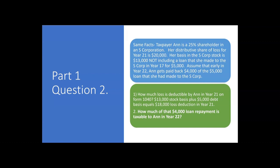Question two. Same facts. Taxpayer Ann's a 25% shareholder in an S-Corp. Her distributive share of loss for year 21 is $20,000. Her basis in the S-Corp stock is $13,000, that's her stock basis. Not including a loan that she made to the S-Corp in year 17 for $5,000. Question one asked how much loss is deductible by Ann in year 21, and we said $13,000 stock basis, that goes first, and then $5,000 of debt basis. Total of $18,000 loss deduction in year 21. And she has no basis remaining in the stock or the debt going into year 22.